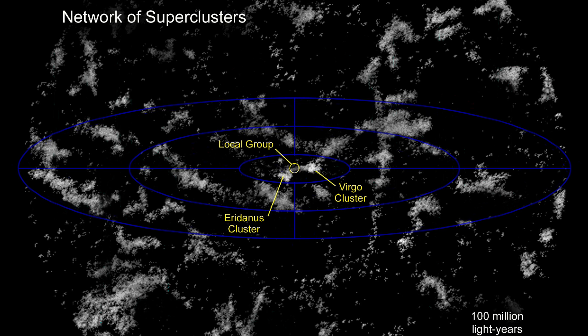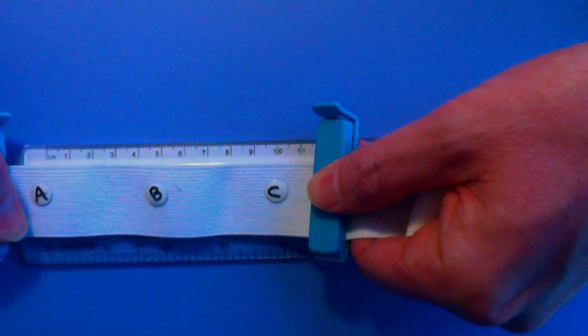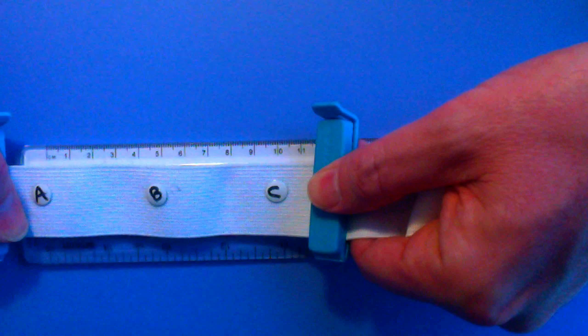Hubble also found that the farther away a galaxy is, the faster it appears to be receding. Again, by analogy, consider three galaxies on some stretchy fabric. Let's take the point of view of galaxy A. Initially, galaxy B is 5 units away, and galaxy C is, say, 10 units away.